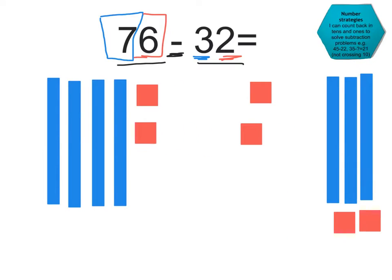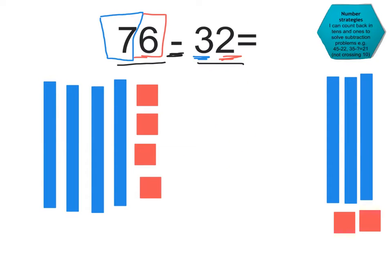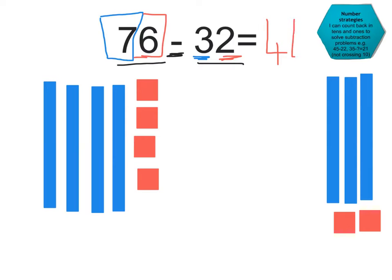And all I do is count up to see how many I'm left with. So we've got 10, 20, 30, 40, 1, 42, 43, 44. So if I write that in, my answer is 44.